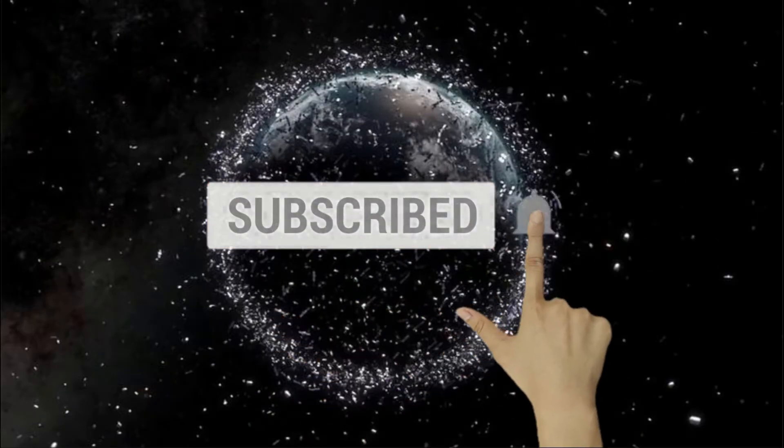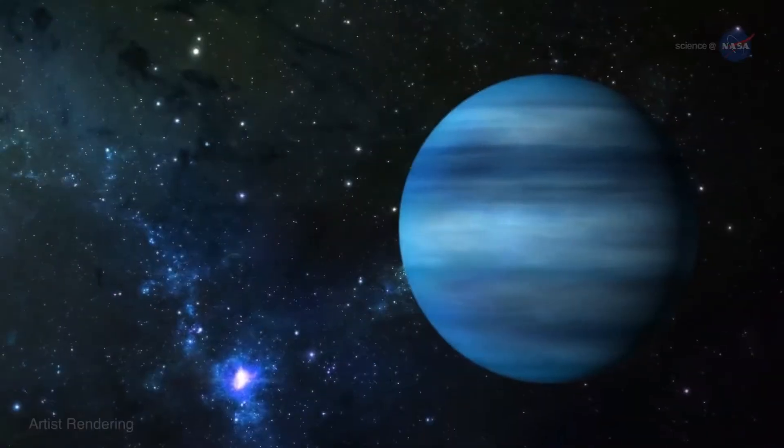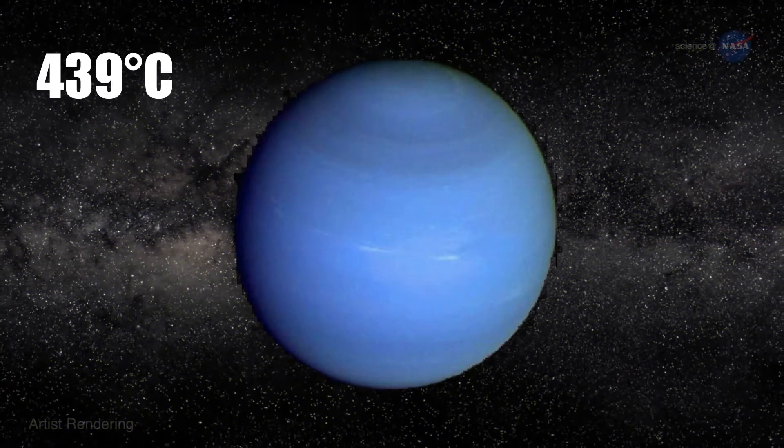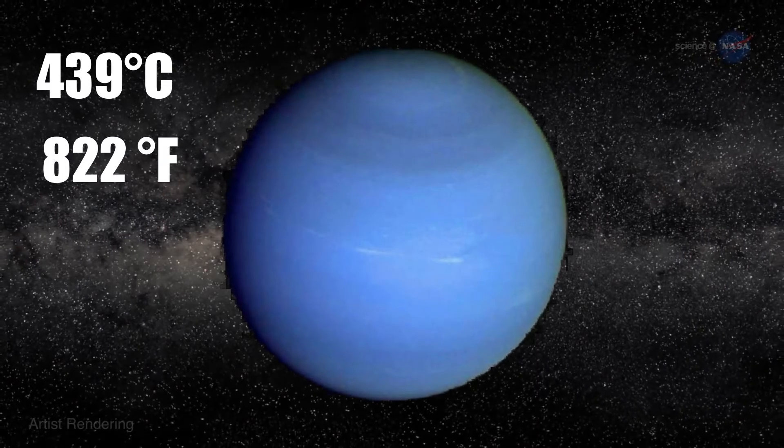Number 10: Gliese 436b. It is a Neptune-sized exoplanet orbiting around the red dwarf Gliese 436 star, whose temperature is 439 degrees Celsius, 822 degrees Fahrenheit. It's very hot, and the interesting thing is that this faraway exoplanet is made mostly out of ice.